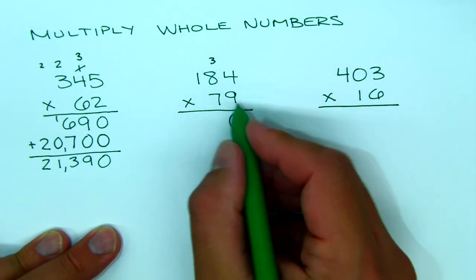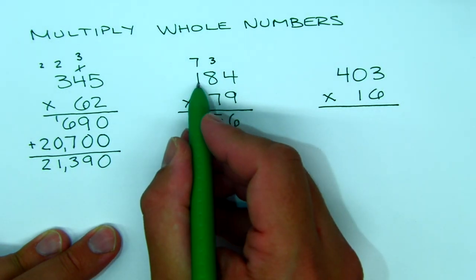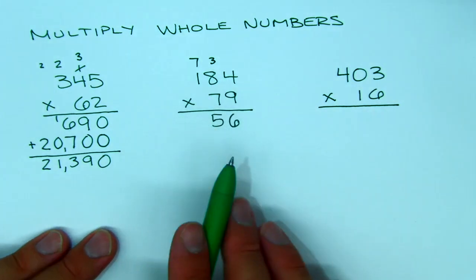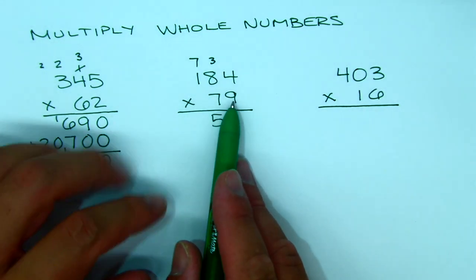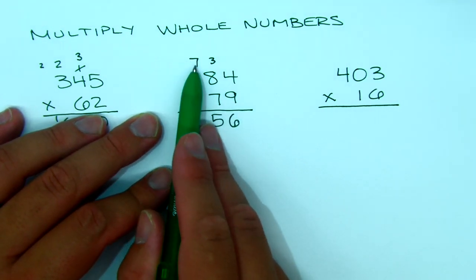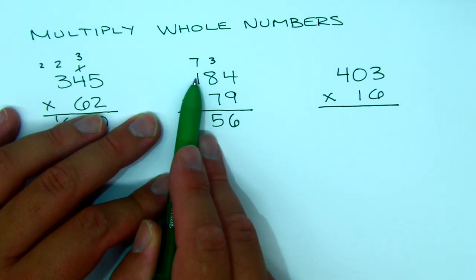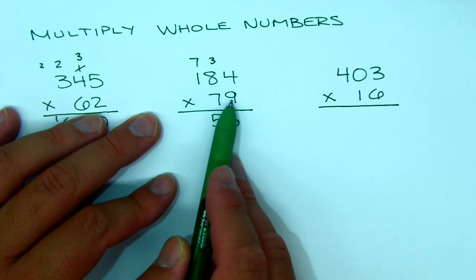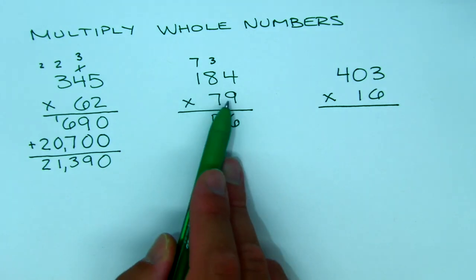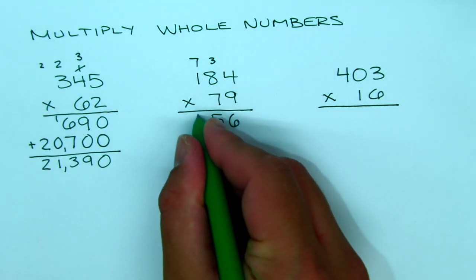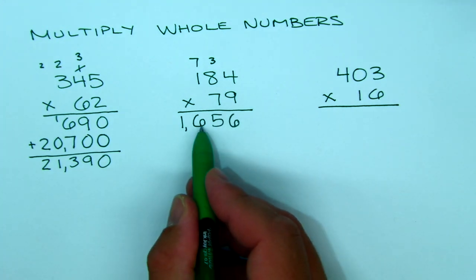9 times 4 is 36: 6 goes down, 3 goes up. 9 times 8 is 72, plus 3 is 75. Then 9 times 1 is 9, plus 7 is 16. A common mistake — even some adults do this — is adding the carried number first: saying 7 plus 1 is 8 and then doing 8 times 9. No — you do 9 times 1 first, then add the 7. So 9 times 1 is 9, plus 7 is 16. Our first partial product, 184 times 9, is 1,656.